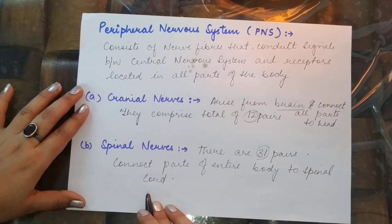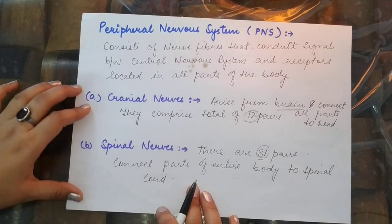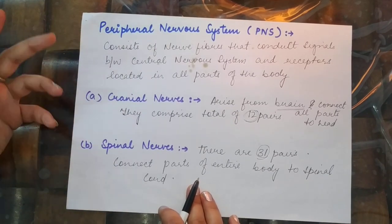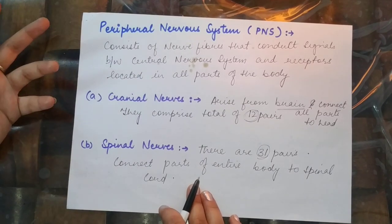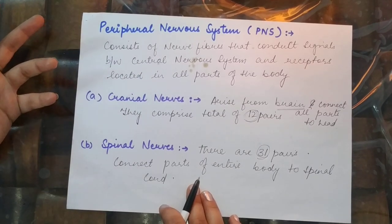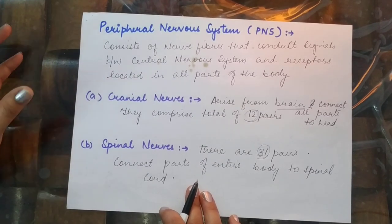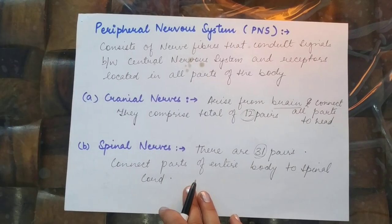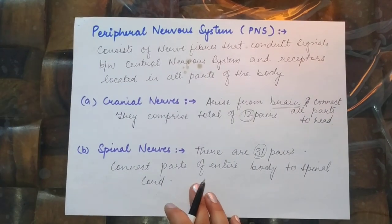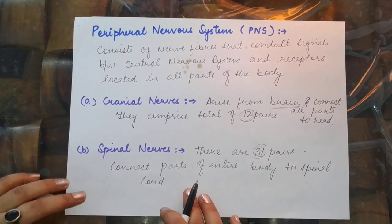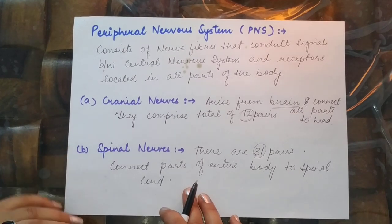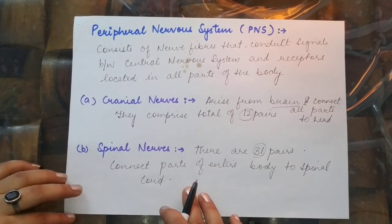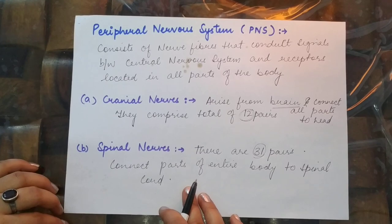The nervous coordination part of this chapter is now over. In the next two segments, we will be taking up coordination in plants, and in the third segment, chemical coordination or the endocrine system in humans. Please like, share, subscribe, and comment if any portion is unclear so we can take it up. Thank you.